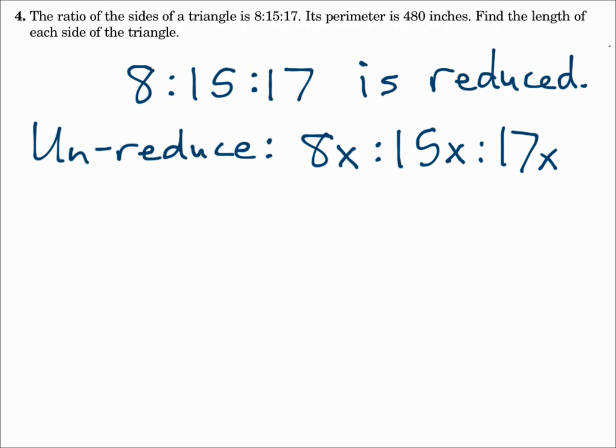Those are the sides of the triangle. If the perimeter is 480 inches, then those side lengths would add up to get 480. When the 8, 15 and 17 are multiplied by whatever x is, that will go back to giving you the original side lengths. So we can then make the equation 8x plus 15x plus 17x equals 480.